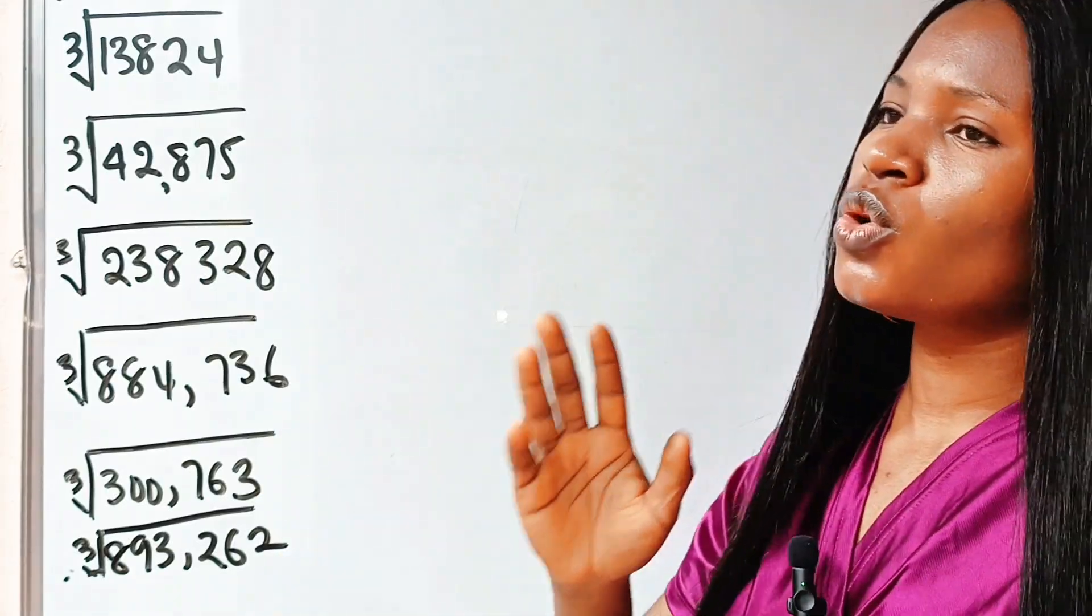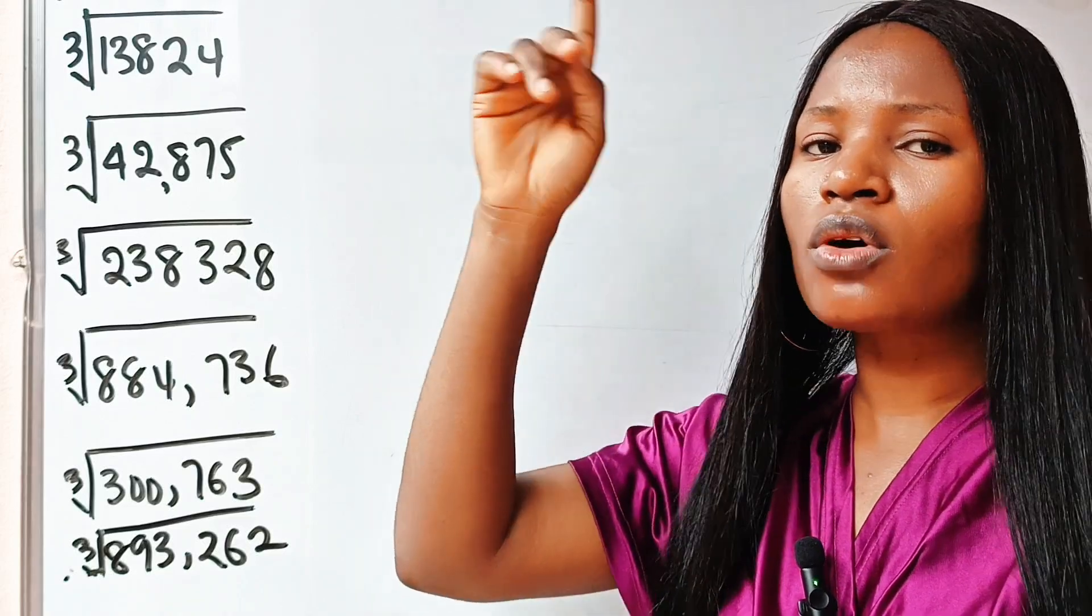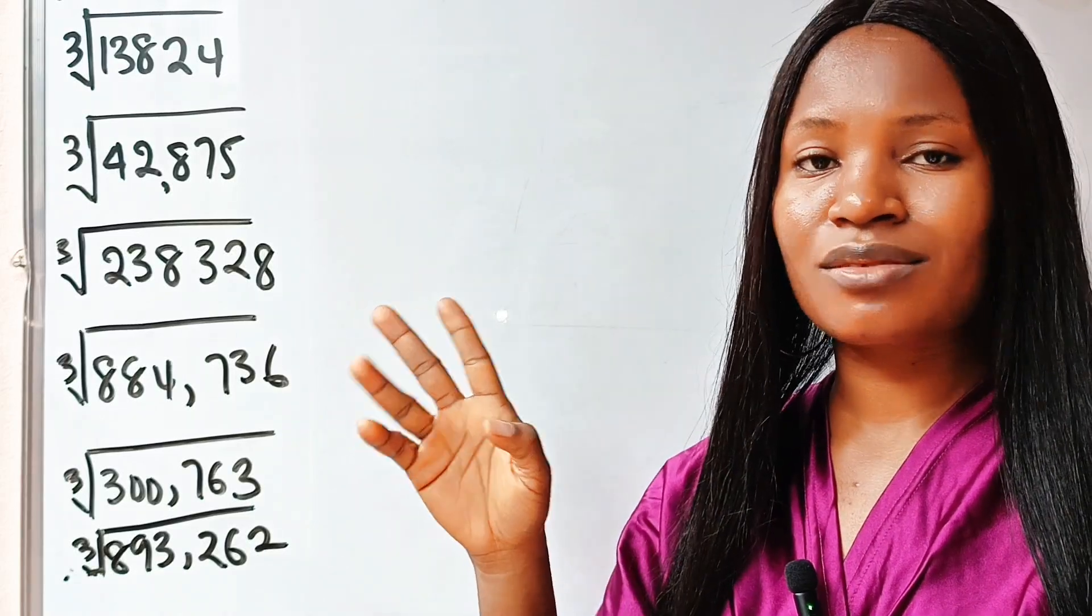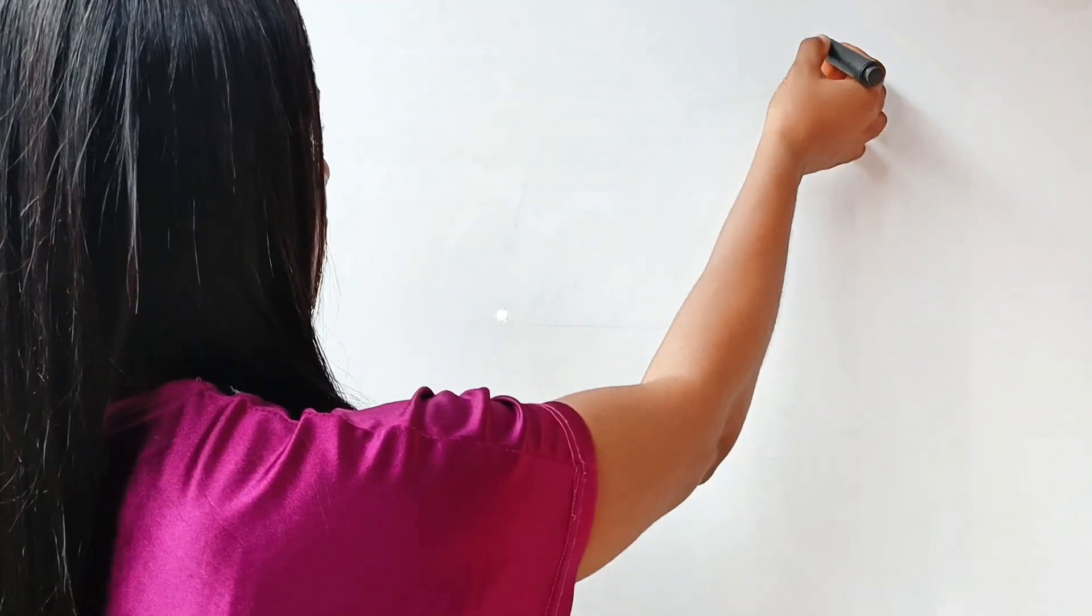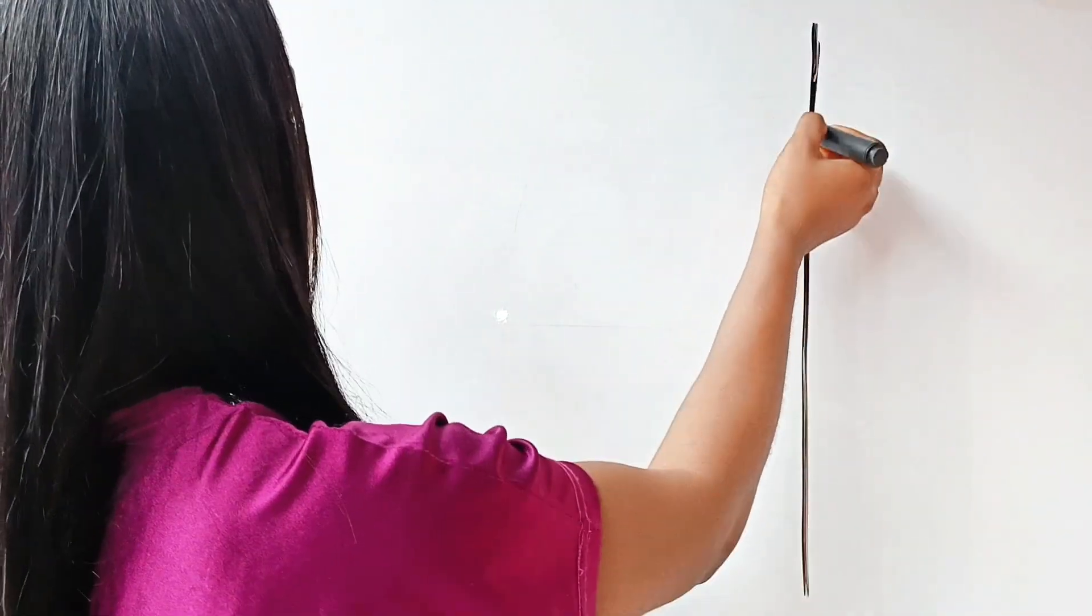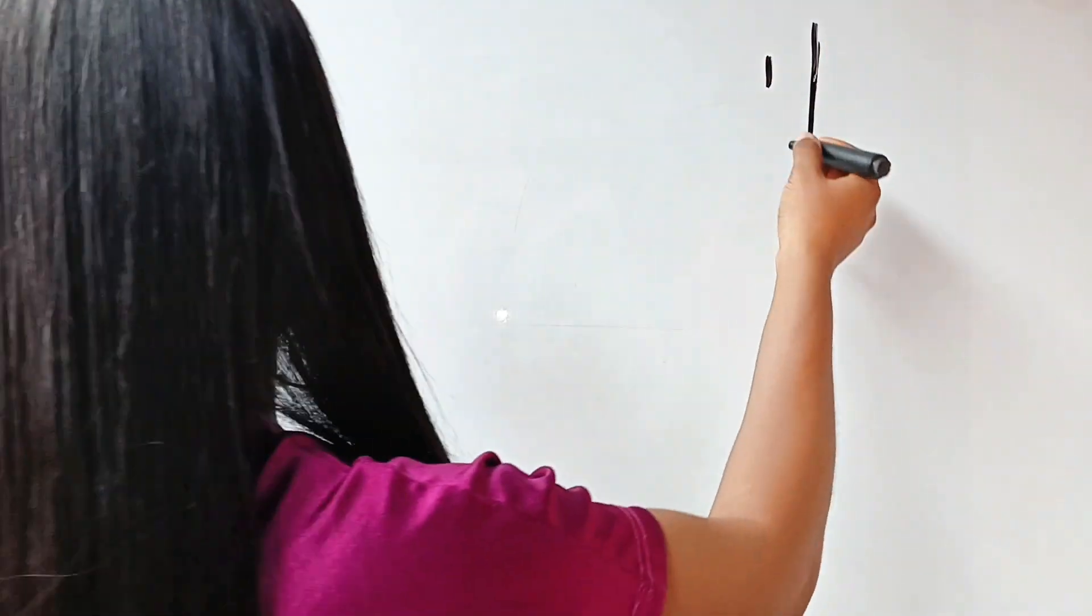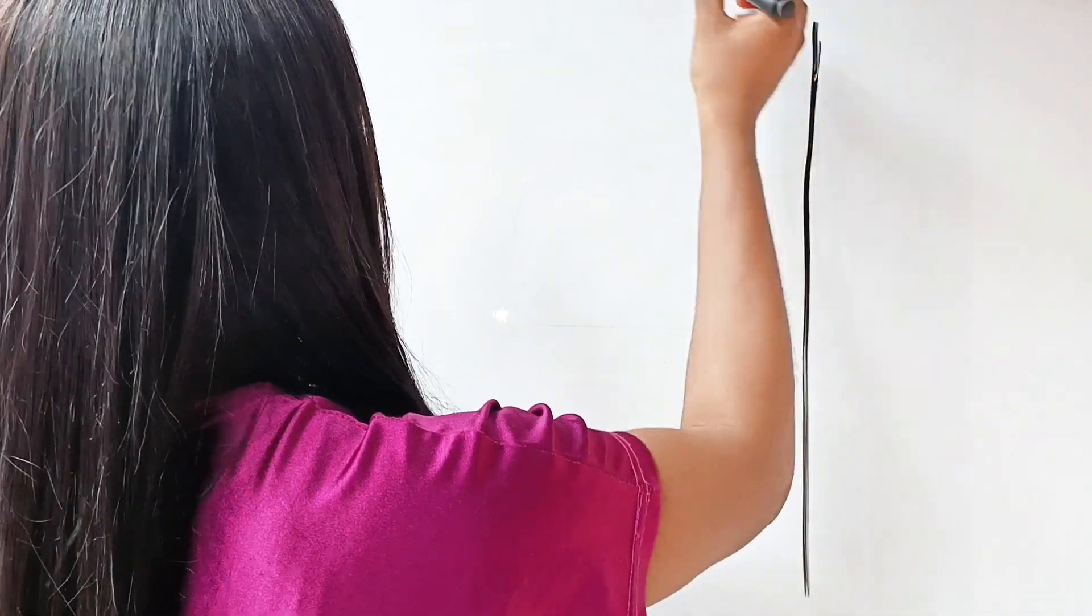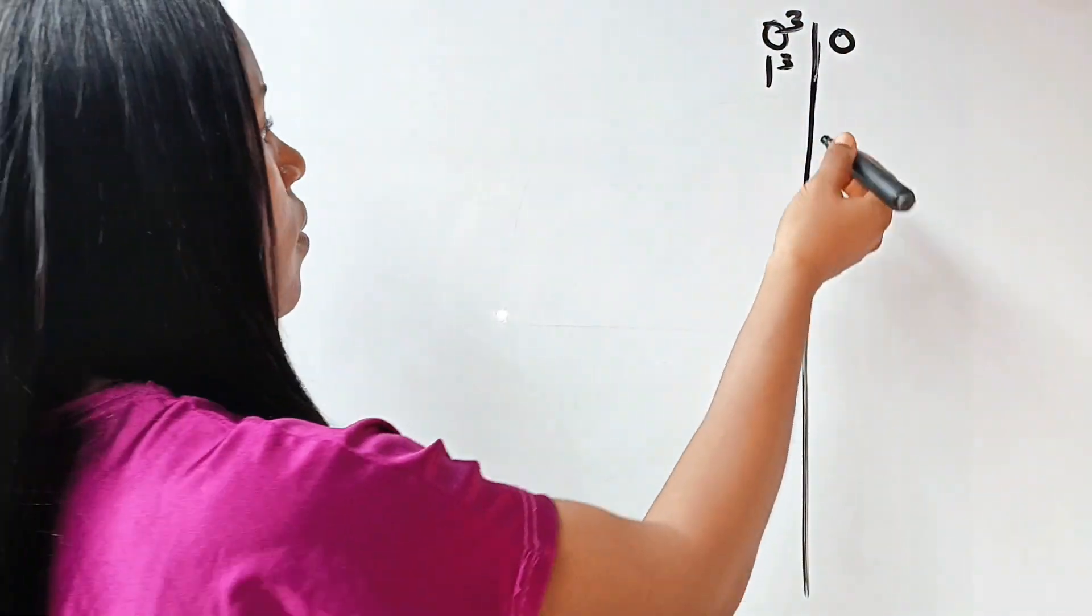The first thing you need to know is to write all the cubes of your numbers from 1 to 9. Just 1 to 9. You can easily memorize that. Now, let's write that. 0 cubed is 0. Let me just leave that one, but you can still include it. 0 cubed is 0. Now, 1 cubed is 1, right?